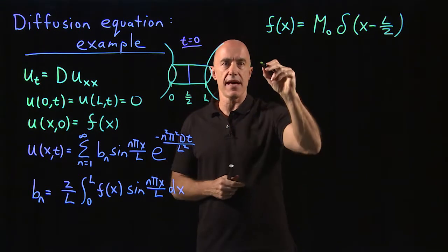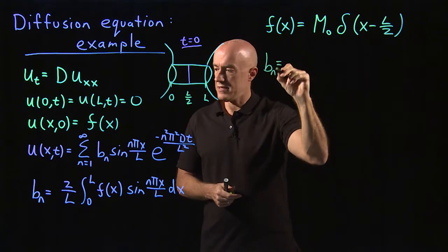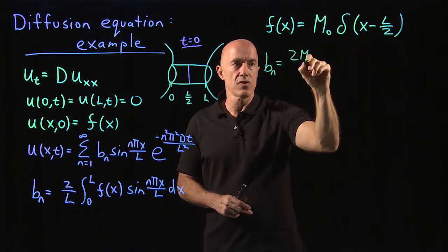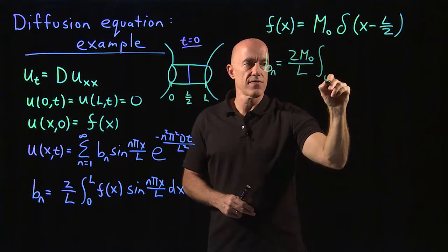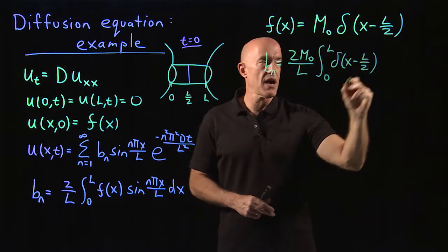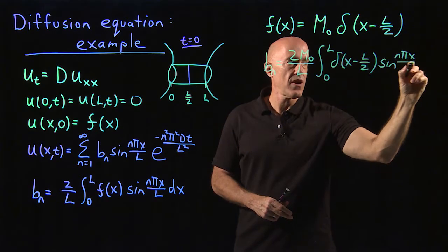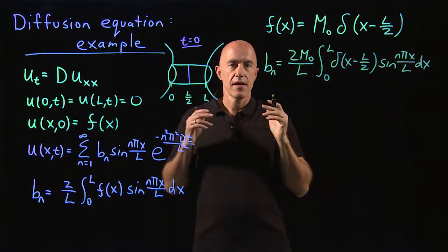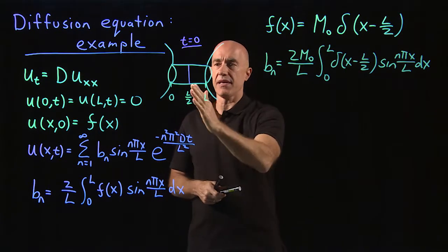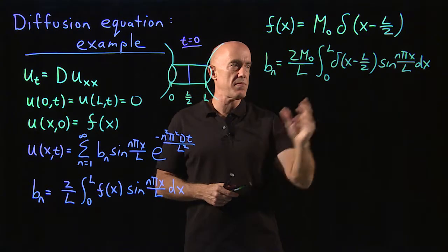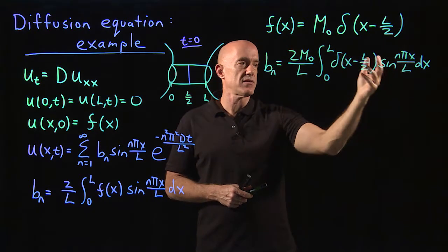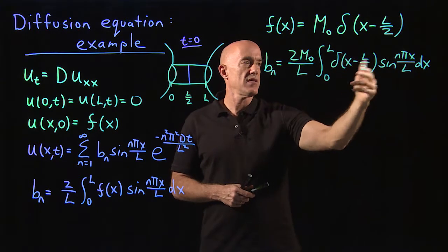Then we can calculate the B sub n's. So B sub n is equal to two over L times the F of x. So the M naught can come out. So two M naught over L times the integral from zero to L. The Dirac delta function centered at L over two times sine n pi x over L dx. Now here comes the beauty of the Dirac delta function in modeling. Besides being a beautiful model for the dye being concentrated in the middle, it also makes the integration trivial. Remember that when you integrate a function against the Dirac delta function, it just picks out the value x equals L over two.